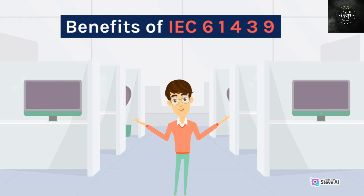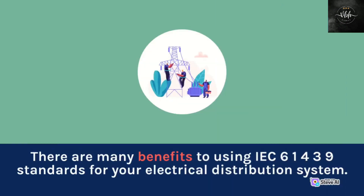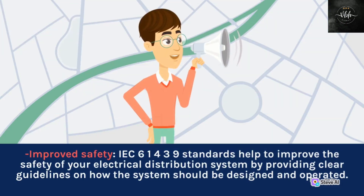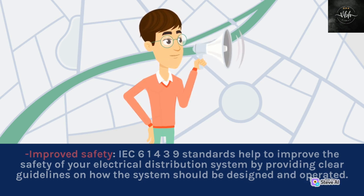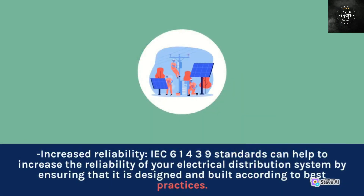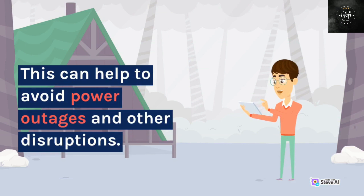Benefits of IEC 61439. There are many benefits to using IEC 61439 standards for your electrical distribution system. Some of the key benefits include: Improved Safety — IEC 61439 standards help to improve the safety of your electrical distribution system by providing clear guidelines on how the system should be designed and operated. This can help to prevent accidents and injuries. Increased Reliability — IEC 61439 standards can help to increase the reliability of your electrical distribution system by ensuring that it is designed and built according to best practices. This can help to avoid power outages and other disruptions.